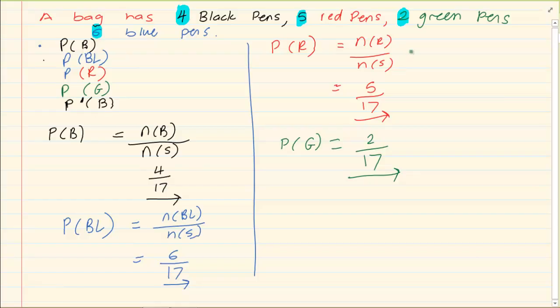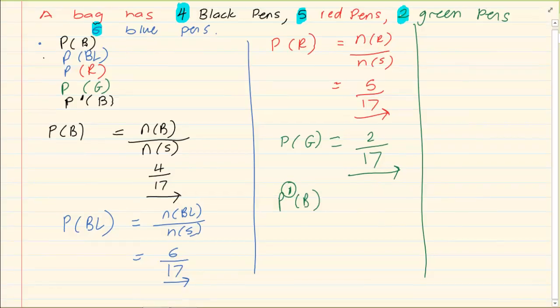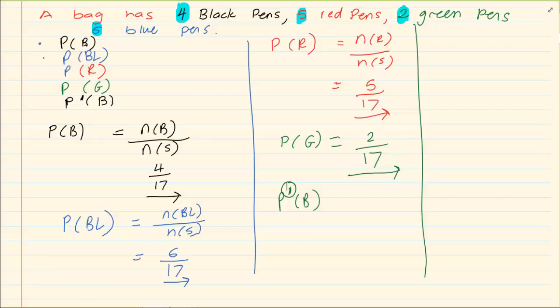Look at the next one. The probability of not black. That was this. That is what that little cuppy stands for. It stands for not. Now what is it? What does that mean? It means everything else besides black.